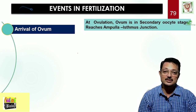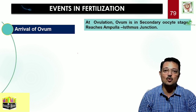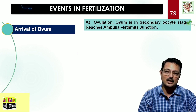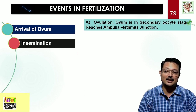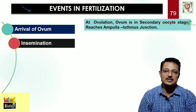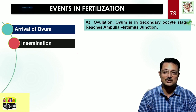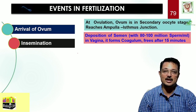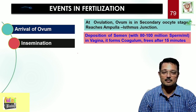The ovum is released from the ovary through the ostia, drawn by the infundibulum, and then glides till the ampullary-isthmic junction. Then comes the event of insemination. During the menstrual cycle, the period from the 13th day to the 17th day is very crucial — it is the fertile window. Insemination means the deposition of semen into the female reproductive tract by the copulatory organ.